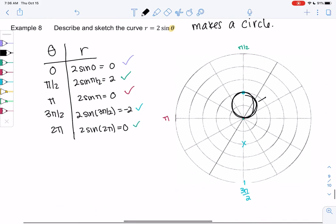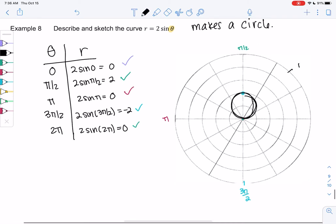Otherwise I wouldn't have necessarily known it went this far out. So you can always add more points, but I think knowing the base shape means I don't have to do that. But if we want to check, let's try a point in between, maybe π/4.